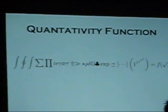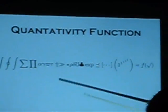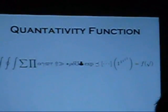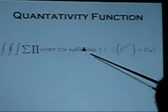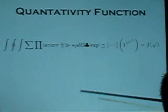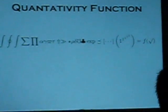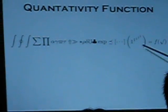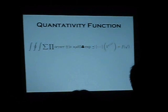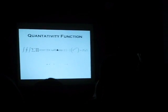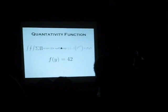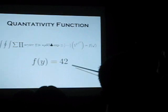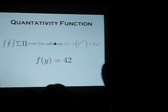The quantitivity function — this is the core of the theory of quantitivity. You might want to look away for this part. You see the club — it's very important in this function. Look again: the power of one. If you want to normalize it. And this is the evaluated value of the quantitivity function: 42.